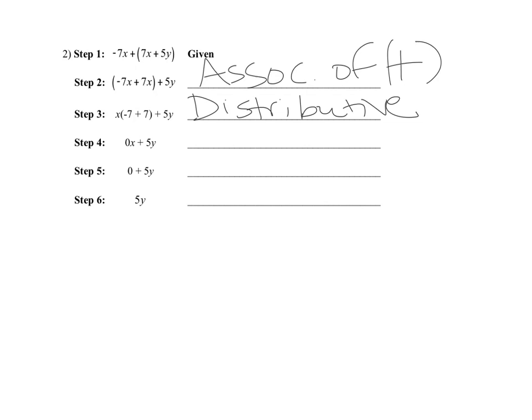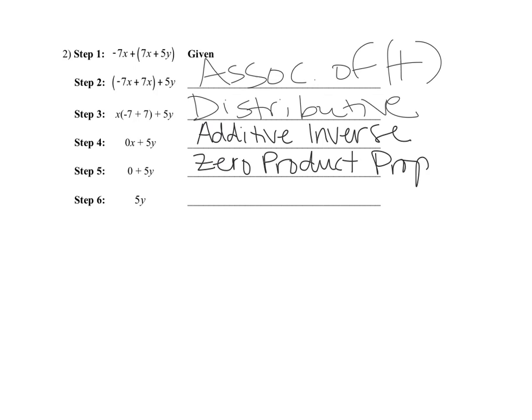From step three to step four, there's a zero in here — and where did that zero come from? It came from doing negative seven plus seven. If you add opposites and get zero, that's the additive inverse property. Then step four to step five: that x has gone away because zero times x gives you zero — that is the zero product property. From step five to step six, the zero goes away because zero plus 5y is the additive identity property — zero plus 5y equals 5y.